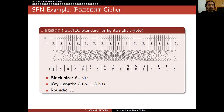Here's an example of an SPN cipher: PRESENT, which is an ISO/IEC standard for lightweight cryptography. This standard contains only two block ciphers, PRESENT and CLEFIA. PRESENT is really simple and designed for hardware. The block size is 64 bits, and in this picture each line represents a single bit, so there are 64 lines. The key length is 80 bits or 128 bits, depending on the user, but the algorithm doesn't change much and the key schedule algorithm is very similar in both cases.